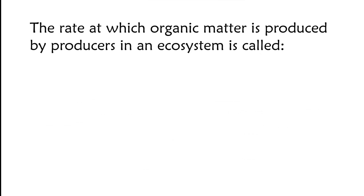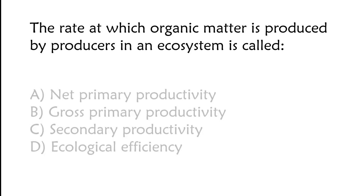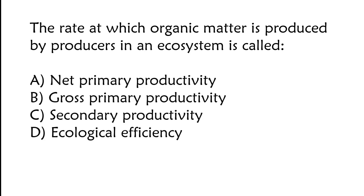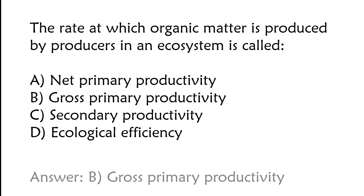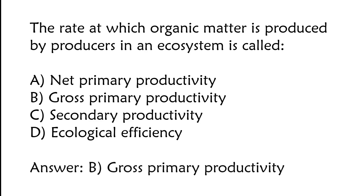The rate at which organic matter is produced by a producer in an ecosystem is called: A) net primary productivity, B) gross primary productivity, C) secondary productivity, D) ecological efficiency. The correct answer is option B, gross primary productivity.